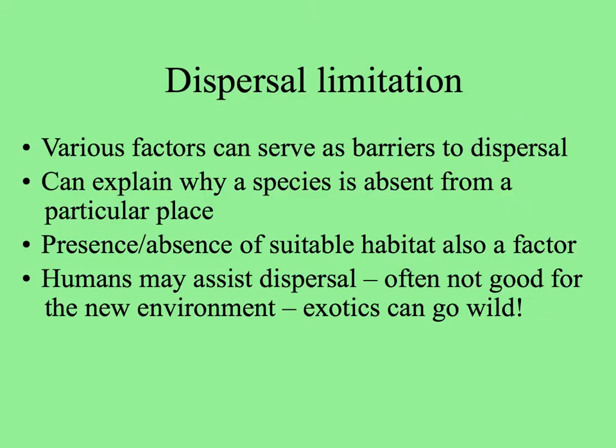In the matrix — the space between fragments — it's often inhospitable to animals and plants needing to cross that area. The matrix harshness can certainly explain why a species is absent from a particular place. Of course, the suitable habitat has to be there too. And sometimes humans assist dispersal.